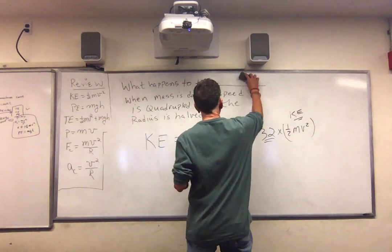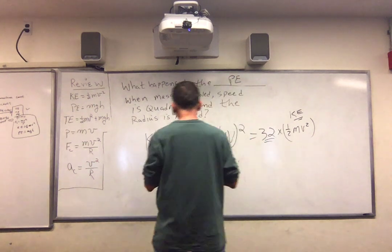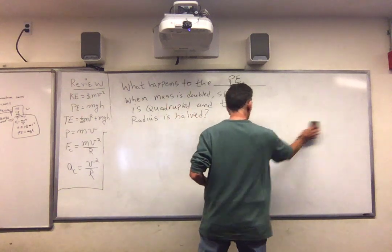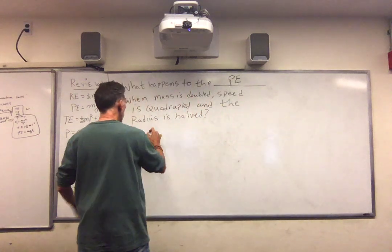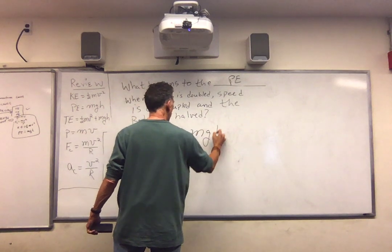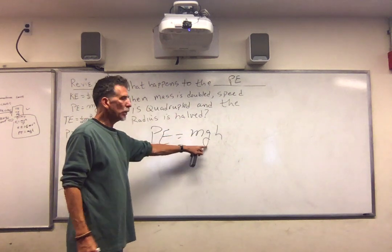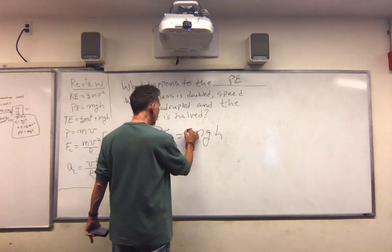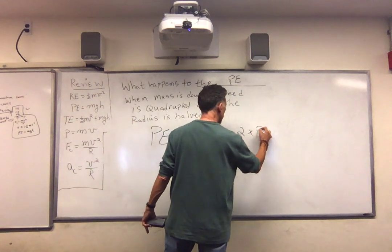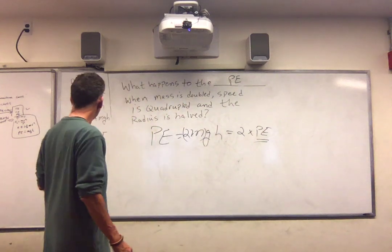Potential energy. Potential energy is mgh. This is easy. The mass is double. There's no speed and there's no radius. So m becomes 2m. And so we just get two times the potential energy. Simple. No tricks.